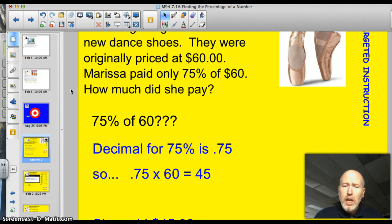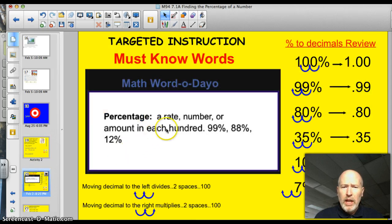Marissa paid $45 for those shoes. Is that a reasonable answer? Yeah, she didn't pay full price. She paid something less than that. All right, let's take a look at the vocabulary word of the night. Percentage. That's the rate or amount in each 100. These are all percentages. 99%, 88%, 12%.